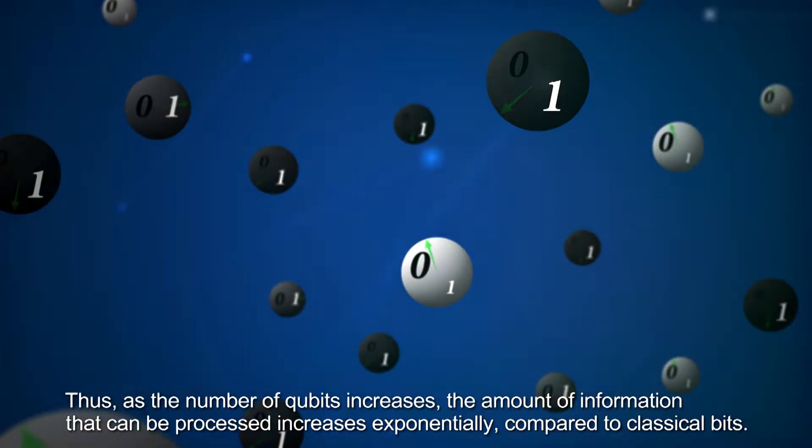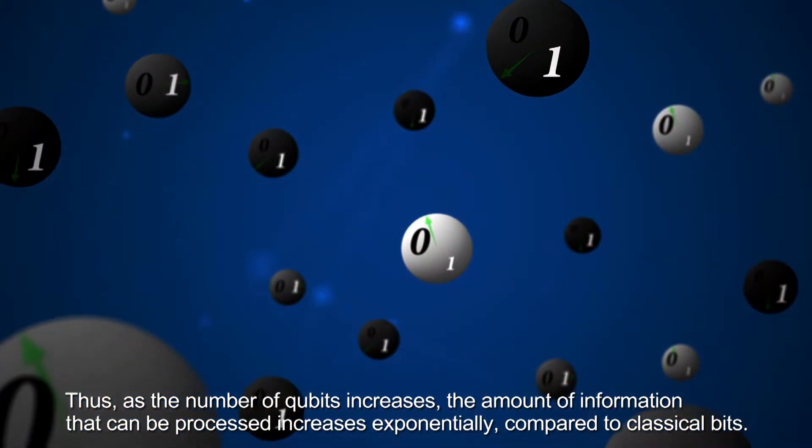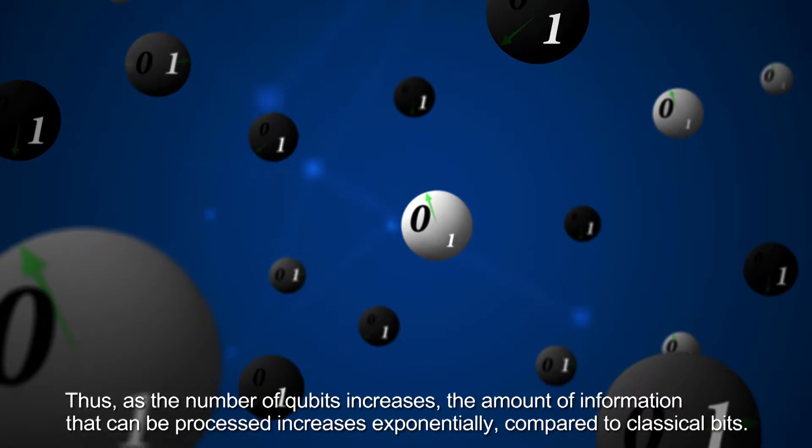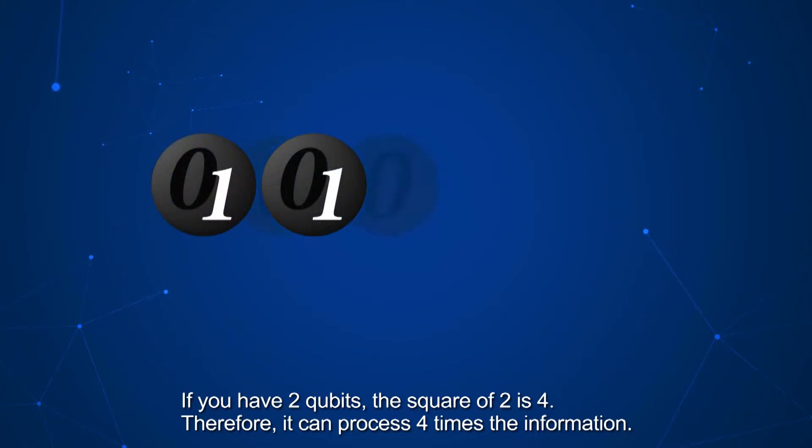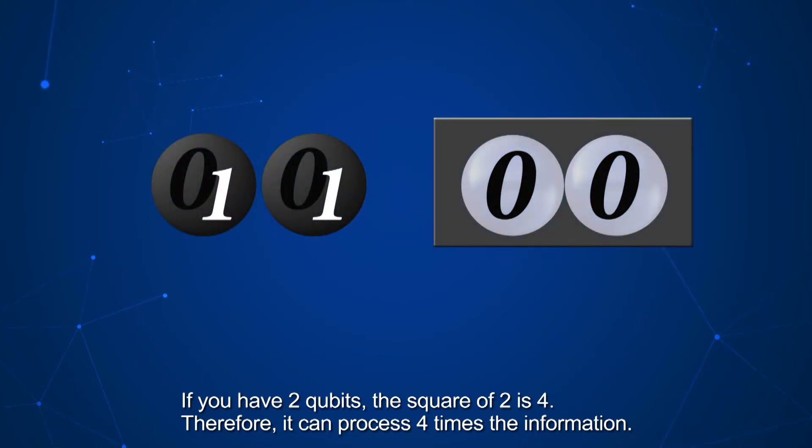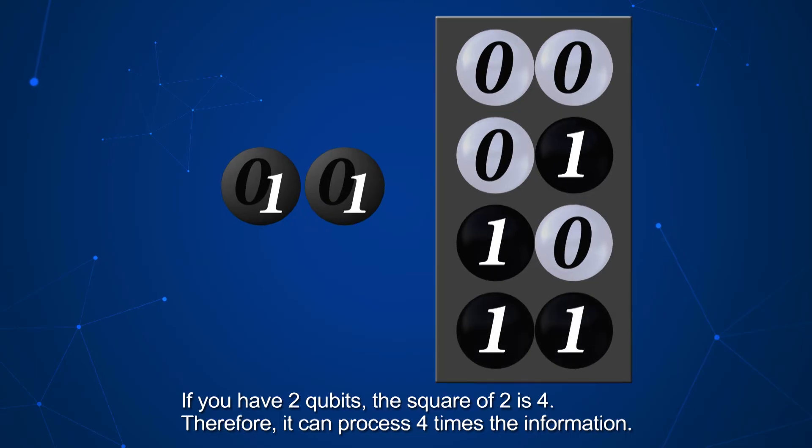Thus, as the number of qubits increases, the amount of information that can be processed increases exponentially compared to classical bits. If you have 2 qubits, the square of 2 is 4. Therefore, it can process 4 times the information.